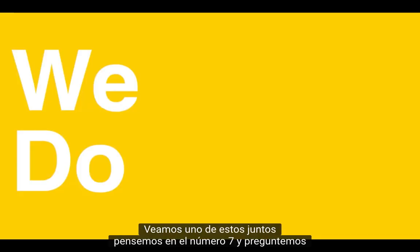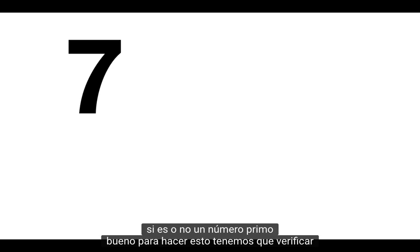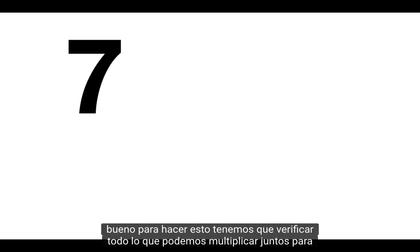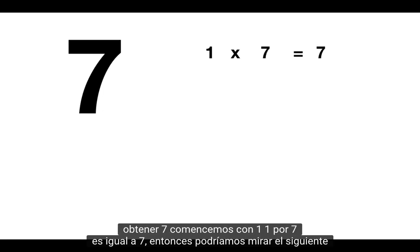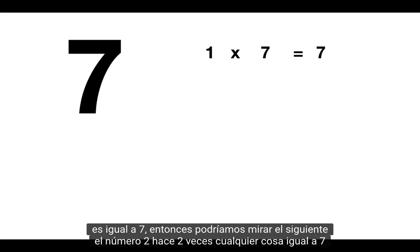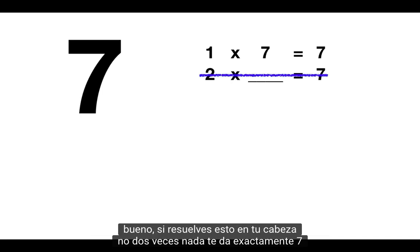Let's look at one of these together. Let's think about the number 7 and ask whether or not it's a prime number. To do this we have to check everything we can multiply together to get 7. Let's start with 1: 1 times 7 equals 7. Then we could look at the next number, 2. Does 2 times anything equal 7? No, 2 times nothing gives you exactly 7.